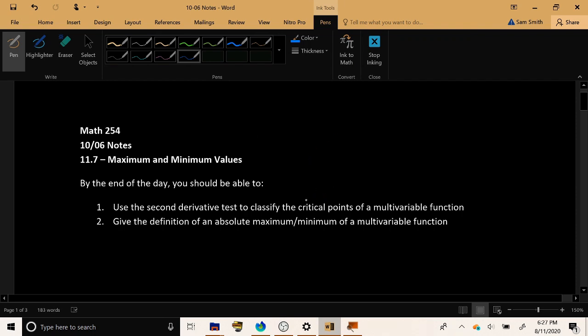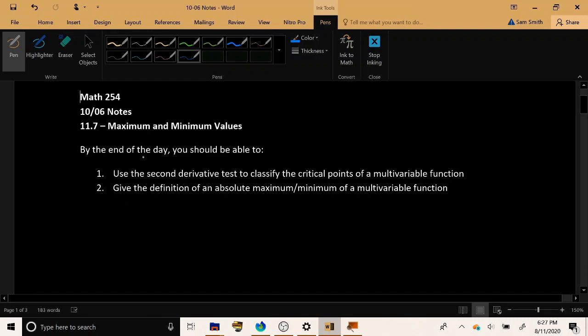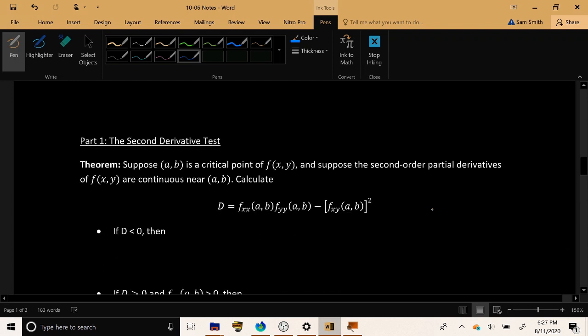All right, so in today's video, we're going to be talking more about maximum and minimum values of a function of multiple variables. We're going to introduce a very nice, convenient test called the second derivative test to classify the critical points of a multivariable function as local mins, local maxes, or potentially saddle points, points which don't quite qualify as either a local min or a local max. And then we're going to be talking about what is the definition of an absolute maximum slash minimum of a multivariable function. So let's go ahead and get started.